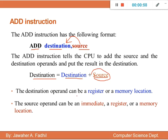The destination operand can be a register or a memory location. By register we mean AX, BX, CX, and so on. By memory location we mean the value between brackets, for example [500]. The source operand can be an immediate value, which means a hex value, a register value, or a memory location.